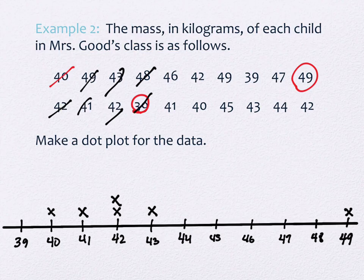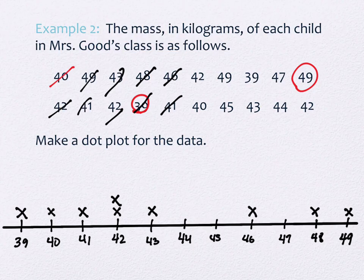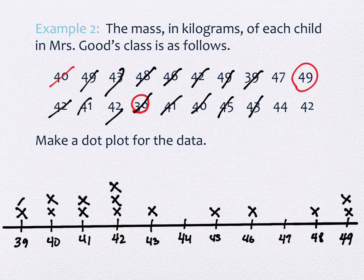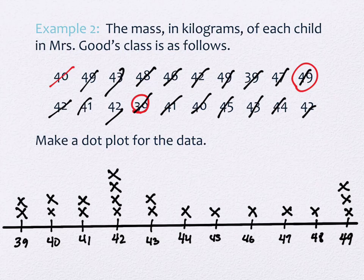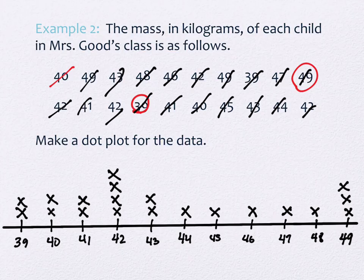Continuing: 49, 41, 43, and 42 already has an X so we stack them. Then 48, 39, 46, 41, 42, 40, 49, 45, 39, 43, 47, 44, 49, 42. This picture gives you a really good sense of how the weights distribute among the children — you see it all in one place. If a category had no values, it would just have no X's, but it still has to be represented.